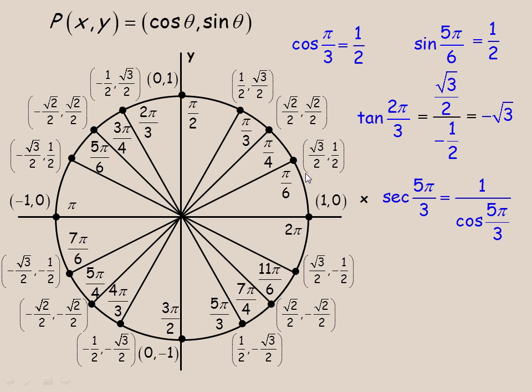Now 5π/3 is down here in the fourth quad. You can actually rotate it all the way around to that point. And the cosine would be 1 half, because the x-coordinate is the cosine of the angle. So this would just be 1 over 1 half, of course, and 1 divided by 1 half is 2.